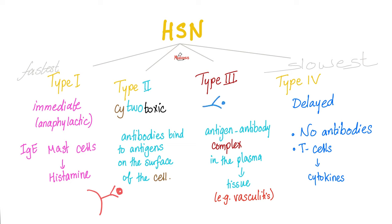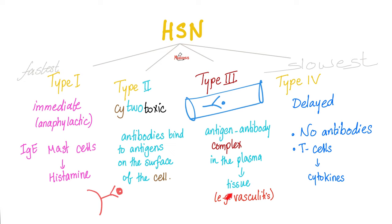In Type 3, you have antigen-antibody complexes, same as Type 2, but with one big difference: this happens in the blood. Since they are hanging around in the blood, the antigen-antibody complex can end up being deposited in the blood vessels, causing vasculitis; in your joints, causing arthritis; in your kidney, causing nephritis; and so on.